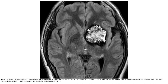FLAIR and T2 MRI in the same patient show reticulated hyperintense signal in the core of the lesion with a hypointense hemosiderin rim surrounding the lesion. Despite its large size and signal heterogeneity, there is no surrounding vasogenic edema, which would be expected in nearly any other lesion.